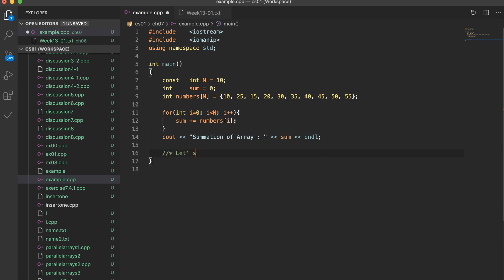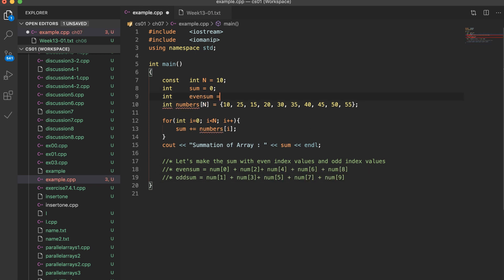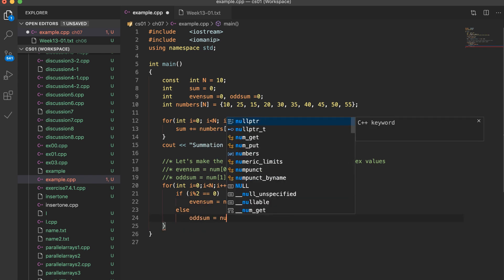Now let's make some change to this code to have summation with even index and odd index. We need two more variables to store the even sum and odd sum. The algorithm is straightforward. Inside the loop to check the index is even or odd with the modular operator.